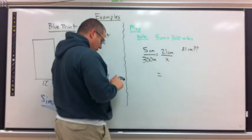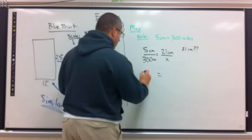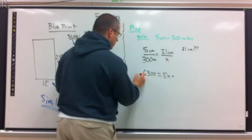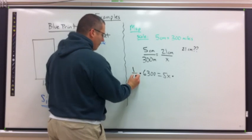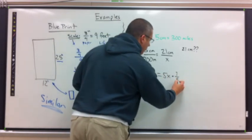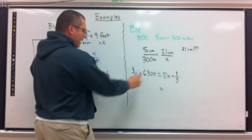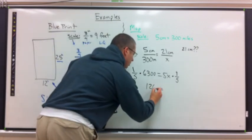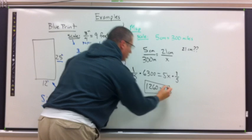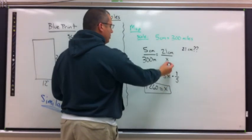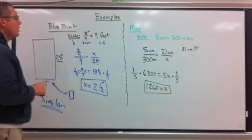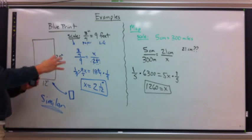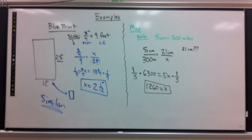Cross products: 21 times 300 equals 6,300, and 5 times x is 5x. Multiply by the reciprocal of 5, which is 1 over 5. Using the calculator, 6,300 times 1/5 equals 1,260. So 21 centimeters on the map equals 1,260 miles in real life. Those are two different examples of using proportions to do scale drawings — making something smaller or figuring out what a larger picture represents.